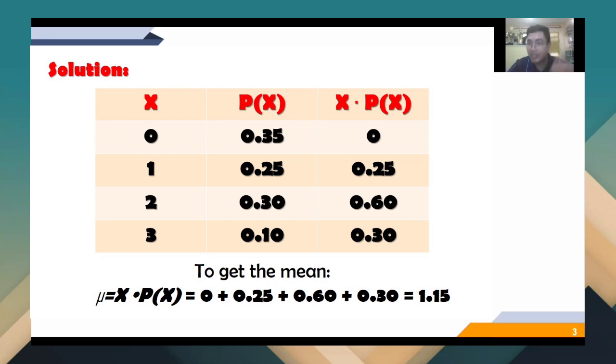So what do we need to do to get your expected value? Or we call this as the mean of the probability distribution. This is quite new. What you need to do is to multiply 0 by 0.35, and that gives you 0. 1 times 0.25, and that gives you 0.25. 2 by 0.30, that gives you 0.60. And 3 times 0.10, that gives you 0.30. So adding all of them, 0 plus 0.25 plus 0.60 plus 0.30, that will give us 1.15.